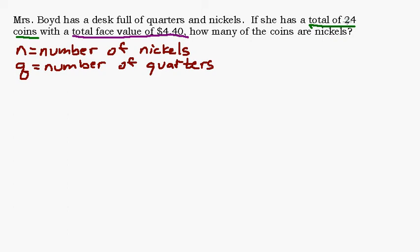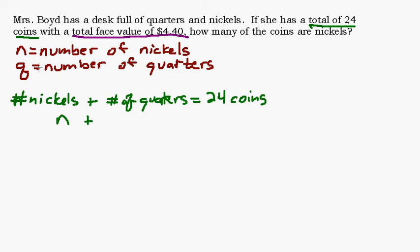She has a total of 24 coins. We know she has n nickels and q quarters. So we certainly know that the number of nickels, however many nickels she has, plus the number of quarters, the actual coins, not the value, equals 24 coins. The number of nickels, we decided that's going to be n. The number of quarters, we decided that was going to be q. So therefore, we know n plus q equals 24. There's our first equation.